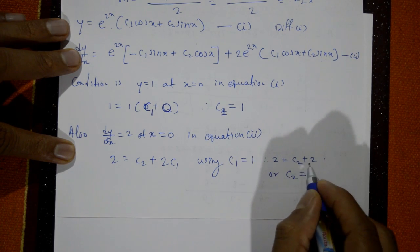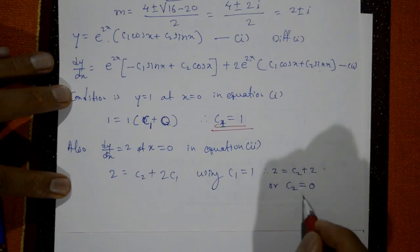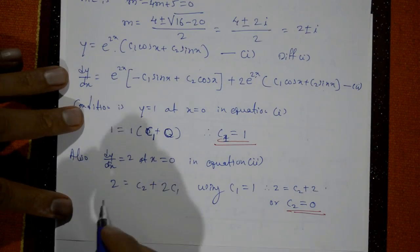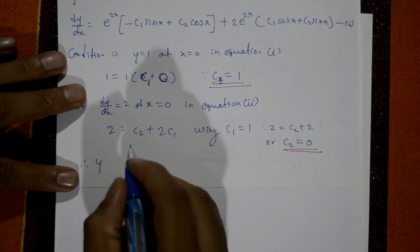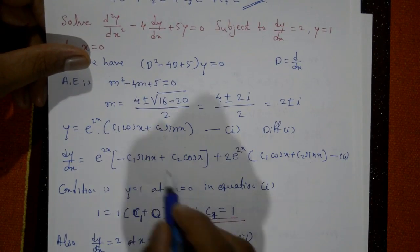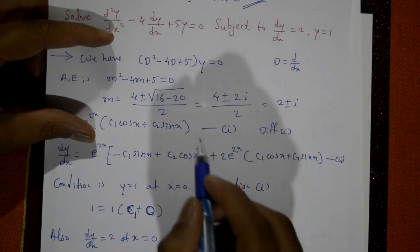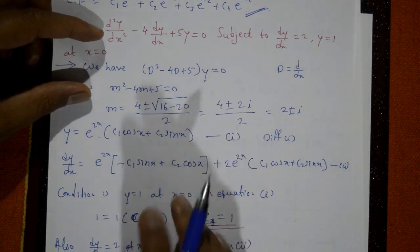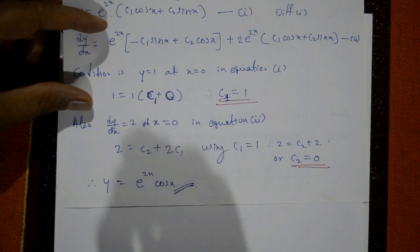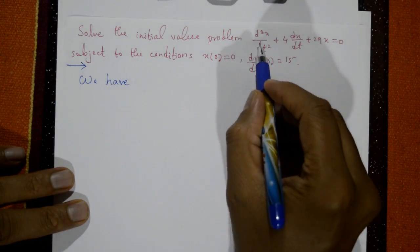Substituting c₁ = 1 and c₂ = 0 into equation number one, the required solution is y = e^(2x) cos x.